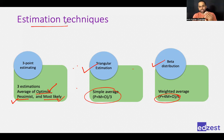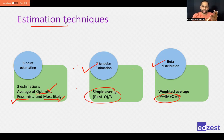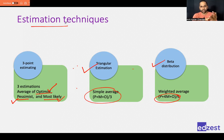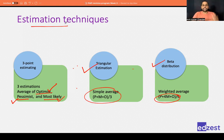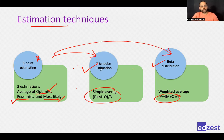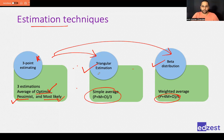Remember for the exam: if you have historical information and like-to-like comparison, use analogous. If you have historical information but not like-to-like, with some parameter and mathematical equation, use parametric. When you don't have historical information and are relying on team experience, use three-point estimating — either triangular or beta. When the question asks which technique gives the most accurate estimate, go for bottom-up.